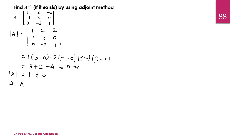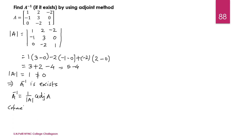So the determinant is 1, which is non-zero. Therefore, A inverse exists. Now we find A inverse by the adjoint method. The formula for A inverse is 1 upon determinant into adjoint of A. For calculating the adjoint of A, first we calculate the cofactor matrix.